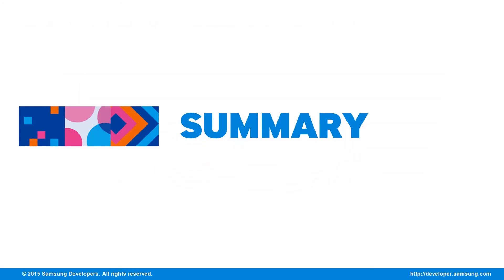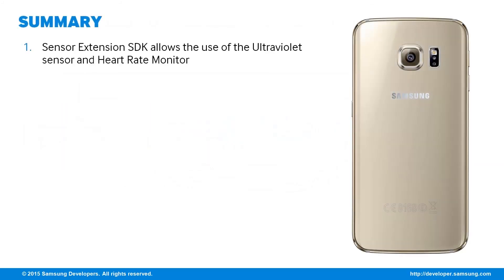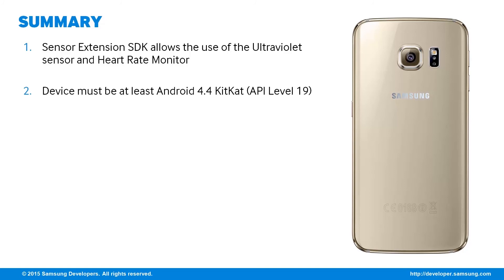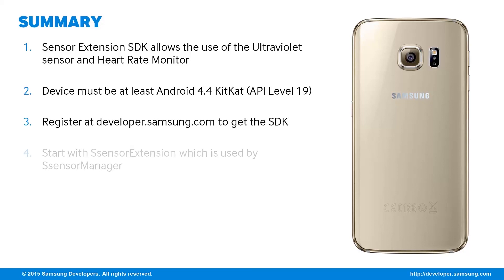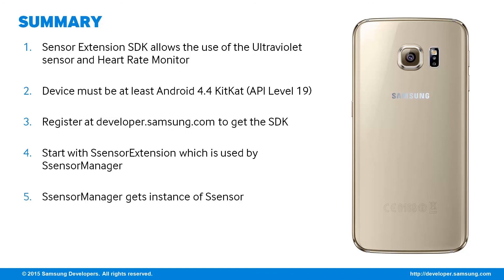Now let's have a summary of today's episode. The Sensor Extension SDK lets developers make great apps that use the ultraviolet sensor and heart rate monitor, perfect for building health apps. Make sure that the device is running at least Android 4.4 KitKat, API level 19 or higher, and must have the heart rate monitor at the back. Remember to register at developer.samsung.com and wait for an approval email before you can get your hands on the SDK. To get started on coding, start with the sSensorExtension, which will be needed by the sSensorManager. The sSensorManager can then get an instance of the sSensor object, and register and unregister event listeners at the onResume and onPause methods of the activity respectively.